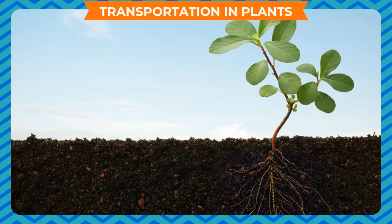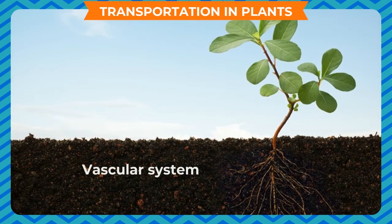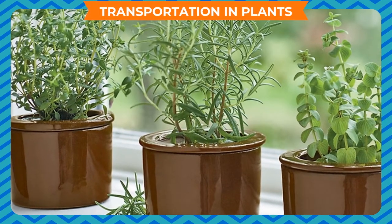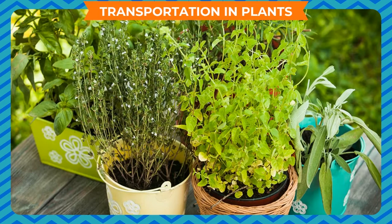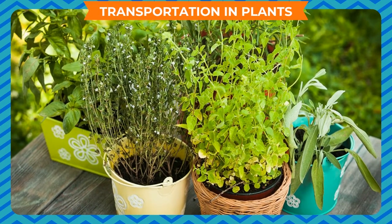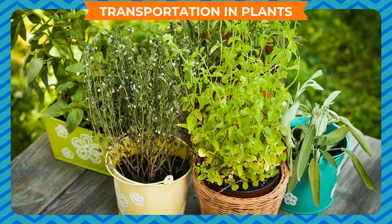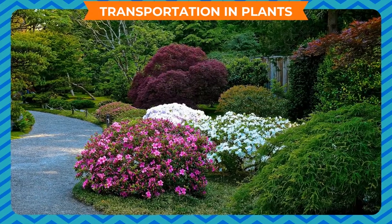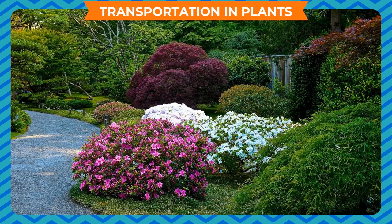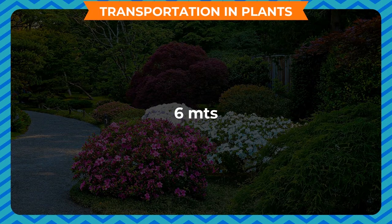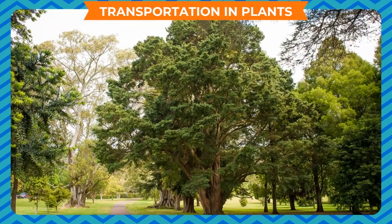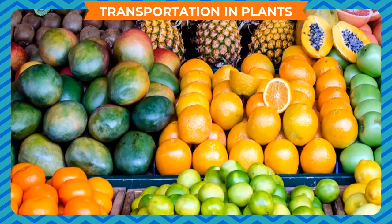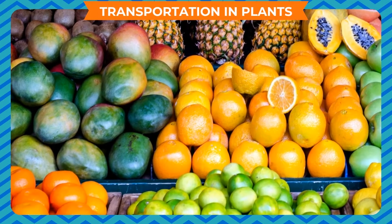Plants have a well-developed transport system called the vascular system. Herbs are small plants with a soft stem; they do not grow very tall, so translocation of food does not have to take place over a large area. Shrubs are comparatively bigger plants with a woody but not very thick stem, and they do not grow more than 6 meters from the ground. Trees are big plants with a thick woody stem, and raw materials and manufactured food need to be transported over a much larger area.